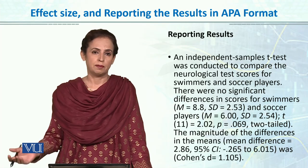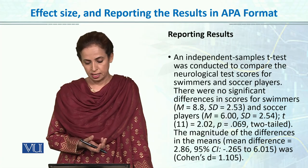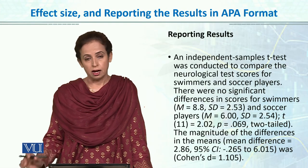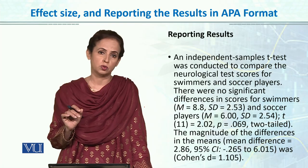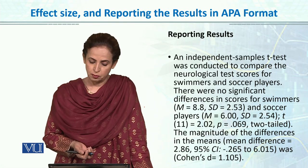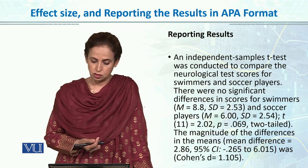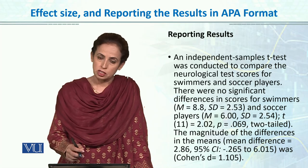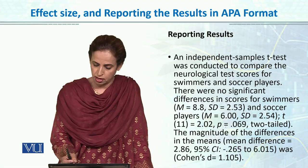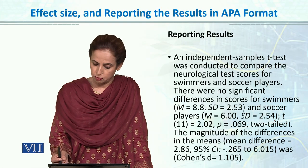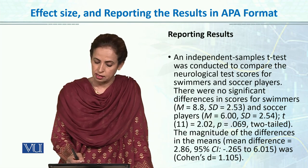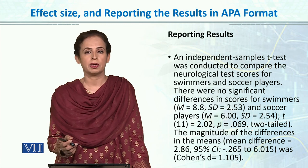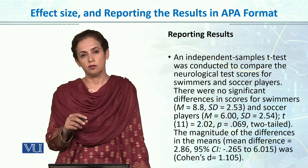So how will we report all these results? As a final step, once you have run the t-test and calculated the t-value and p-value, this is the standard APA — American Psychological Association — format according to which you will report the results. You will definitely add a description of one or two lines, and then plug in the values. 'An independent sample t-test was conducted to compare the neurological test scores for swimmers and soccer players.' If results are not significant, we state: 'There were no significant differences in scores for swimmers' and then report their mean and standard deviation. M and SD will be italicized.